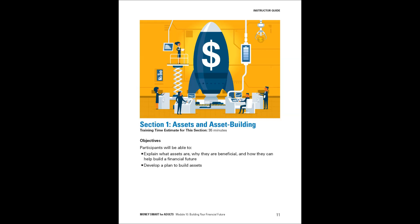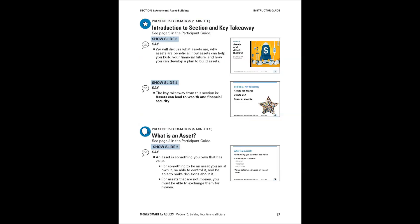Section one: assets and asset building. The objectives are that participants will be able to explain what assets are, why they're beneficial, how they can help build a financial future, and develop a plan to build assets. There is helpful information in the headers and footers to help you stay oriented. The right-hand side of the header reminds you that you're looking at the instructor guide, the left-hand side identifies the section you're in, and the footer identifies the module along with the page number.